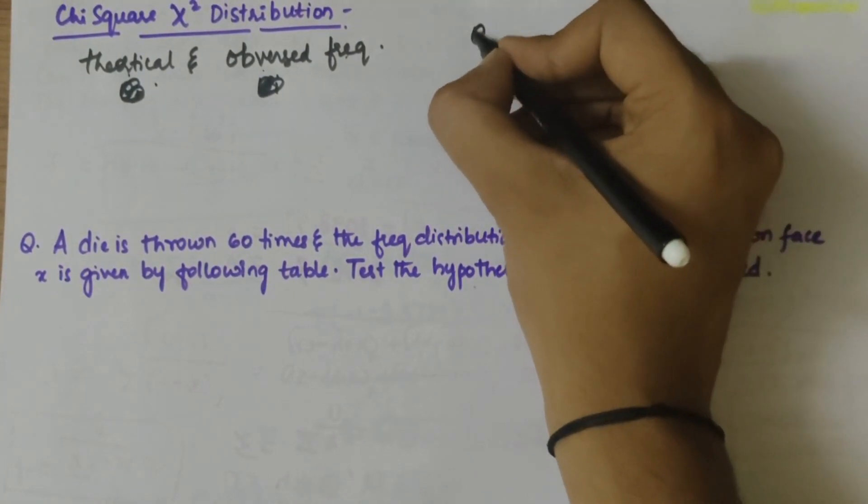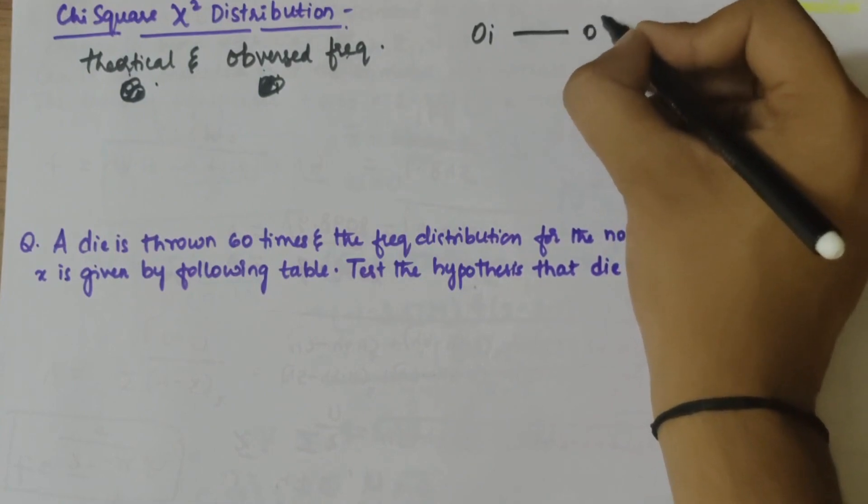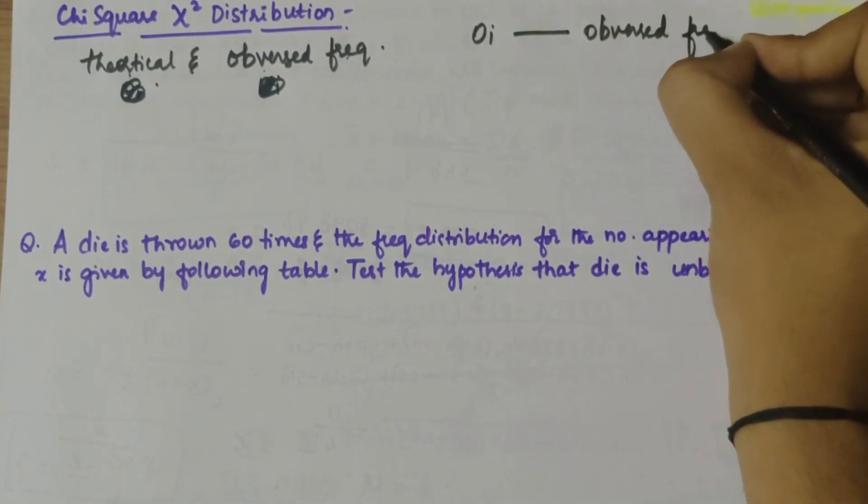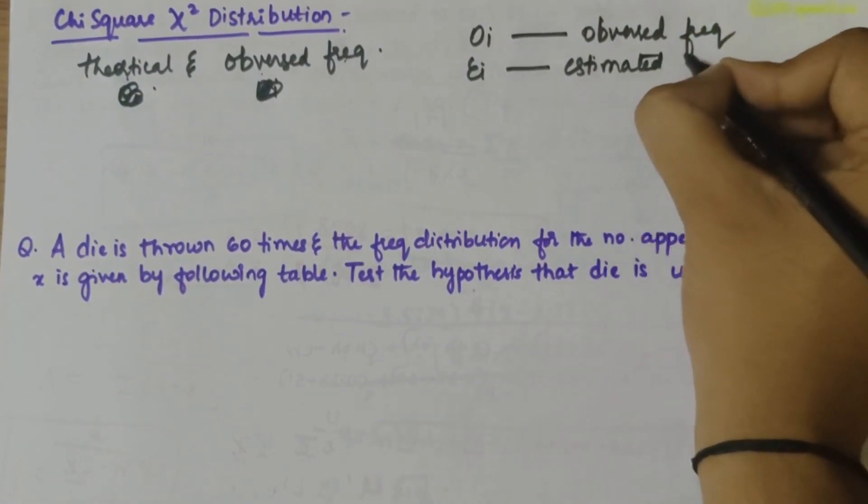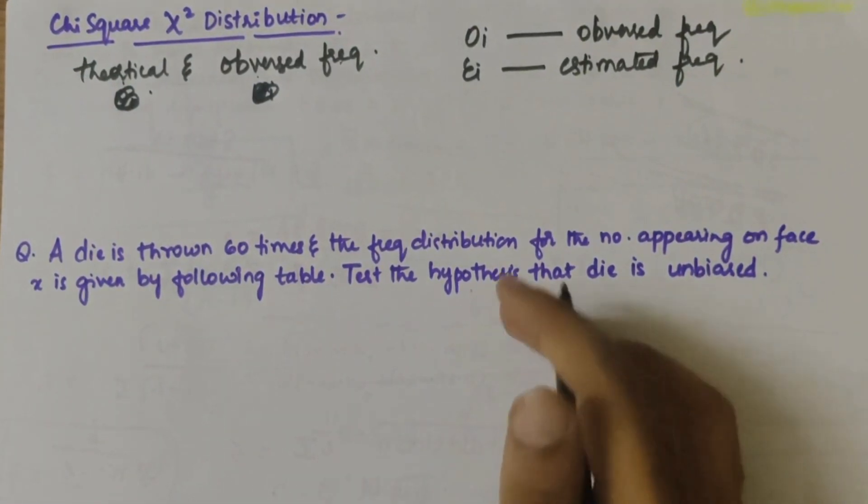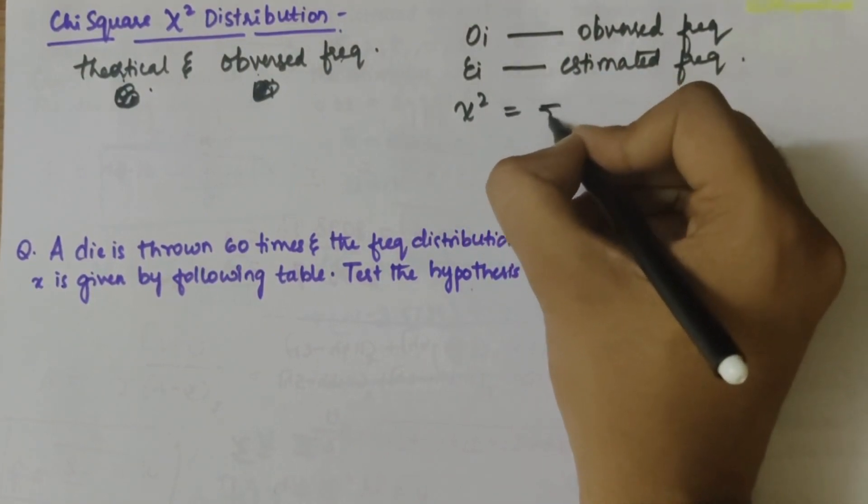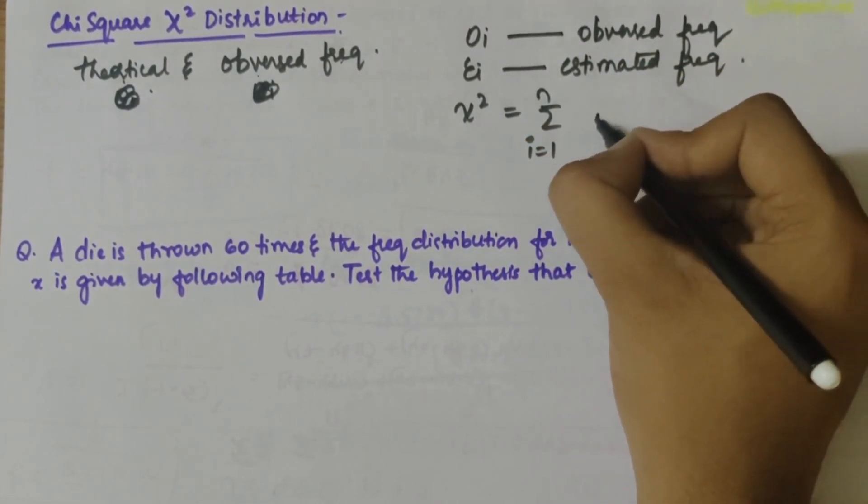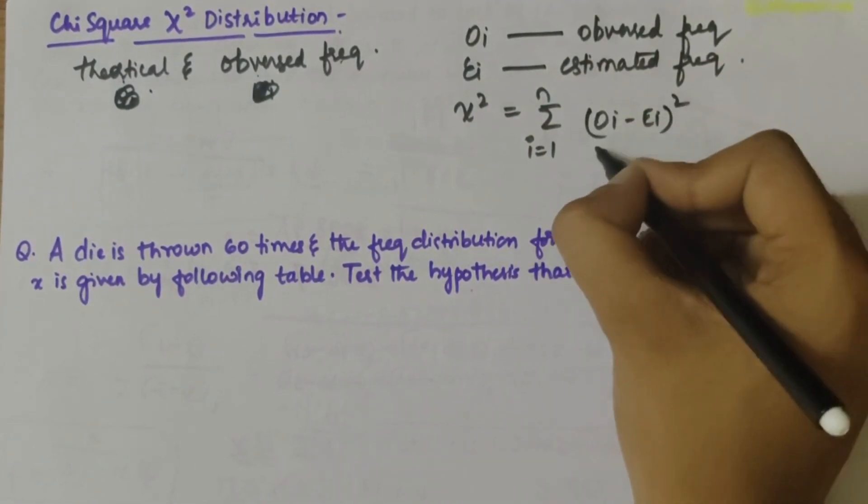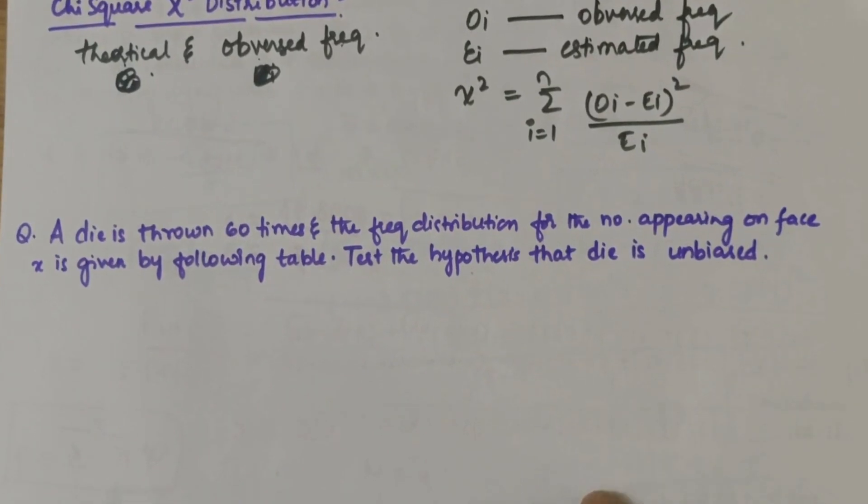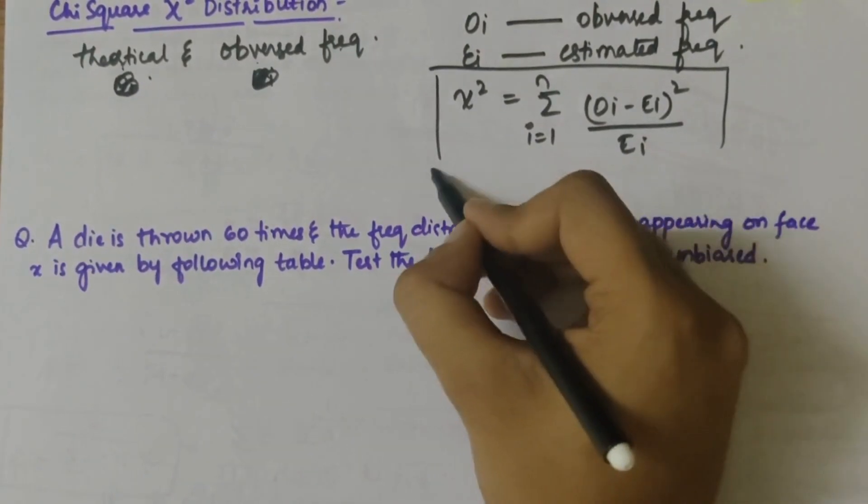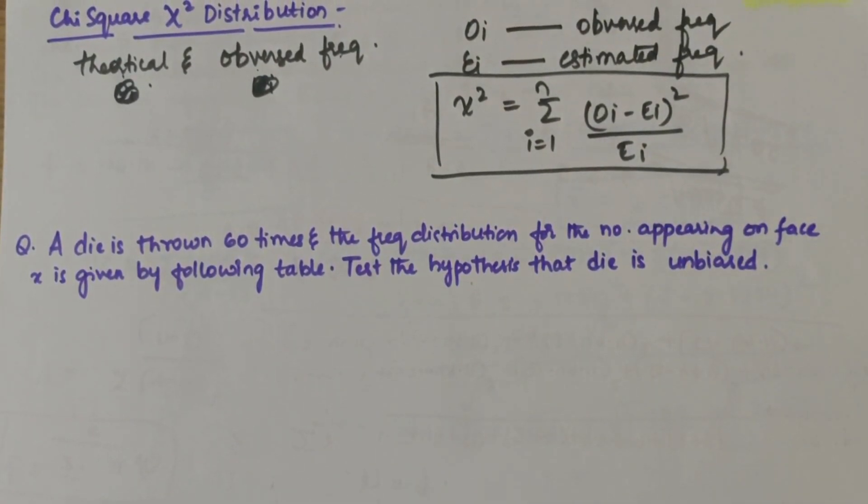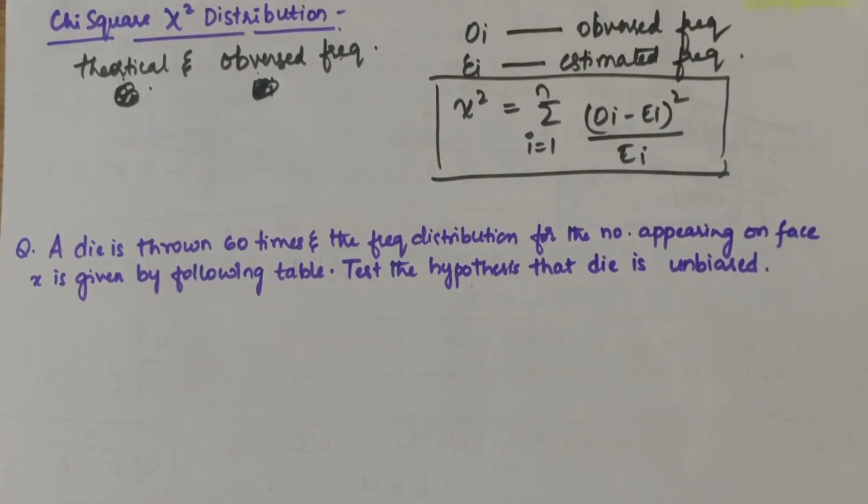Let's take OI to denote the set of all observed frequencies and EI to denote all estimated frequencies. Then the quantity chi-square can be defined as summation i equals 1 to n of OI minus EI whole square by EI. We have to note that if the expected frequencies are less than 10, we have to group them suitably for computing the value of chi-square.